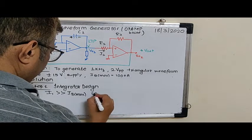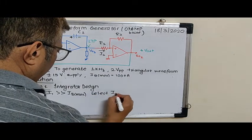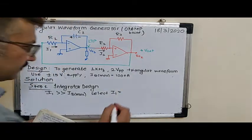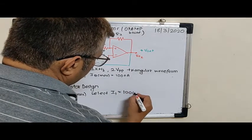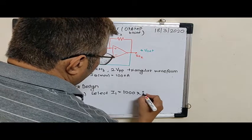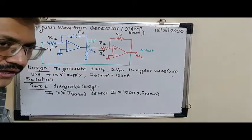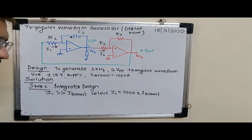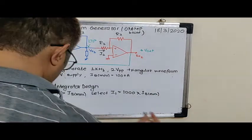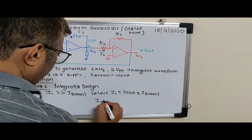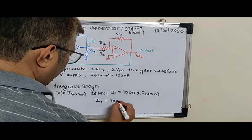So select I1 as, the more the better, let us say 1000 times IB max. Generally we take 100, but here we are taking 1000, anything more than 100 will also do. So that turns out to be, what is I1? I1 turns out to be 100 microA.